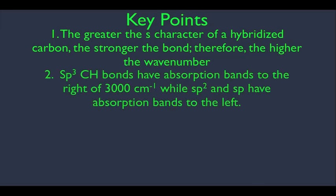We're also going to see — and this is a nice little rule of thumb — that SP3 hybridized carbon CH bonds have absorption bands to the right of the 3000 mark, while SP2 and SP hybridized carbon CH bonds have absorption bands to the left. This gives us a way to read an IR spectrum right away.